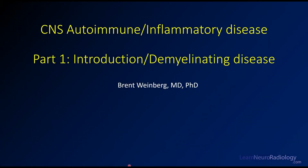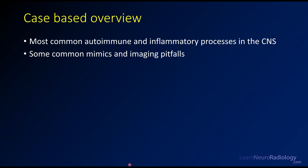Hi everyone, and welcome back to Learn Nerve Radiology. It's been a little bit since we've had some content. This is going to be the first lecture in some coverage of autoimmune and inflammatory diseases of the central nervous system. In this first lecture, I'm going to give you a little bit of an introduction and tell you what we're going to cover. Then we're going to cover demyelinating disease, both in the brain and in the spine. This is going to be a case-based overview covering many of the most common autoimmune and inflammatory processes you'll see on imaging in the CNS.